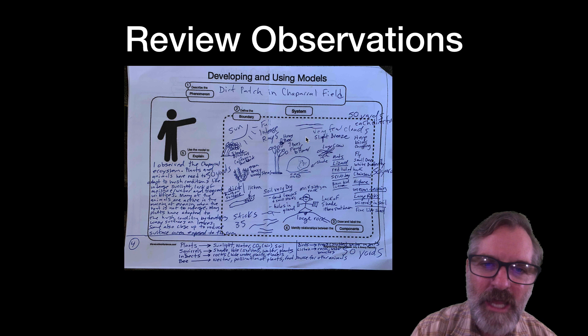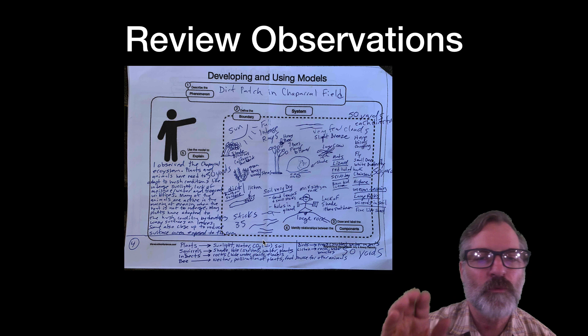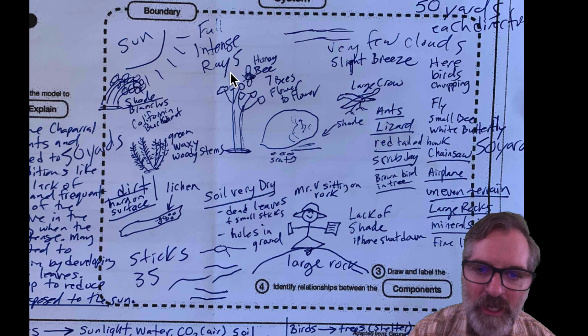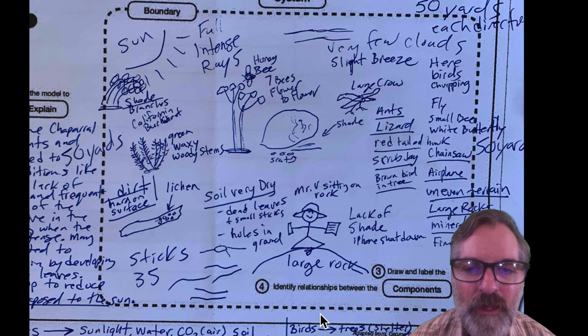Now I'd like you to take five minutes — I really want you to do this. Pause the video and read over every single observation that you made, read it out loud. Like: sunlight, full intense rays; honeybee, I saw seven going from flower to flower. Read every single one and then read over these relationships. Go ahead and pause the video and review your observations of the components of your model.